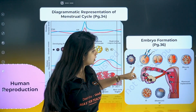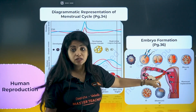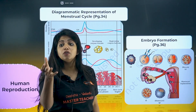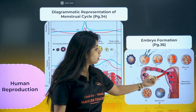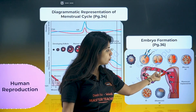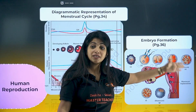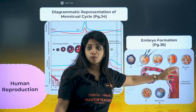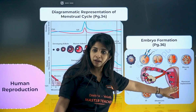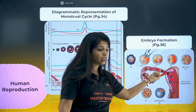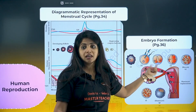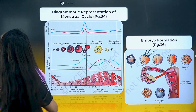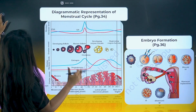Embryo formation — all the stages. 8 to 16 blastomeres — this stage is called morula, found in the fallopian tube. Then the blastocyst stage comes, which is the stage for implantation. So: zygote → morula (8 to 16 cell stage) → blastocyst for implantation.